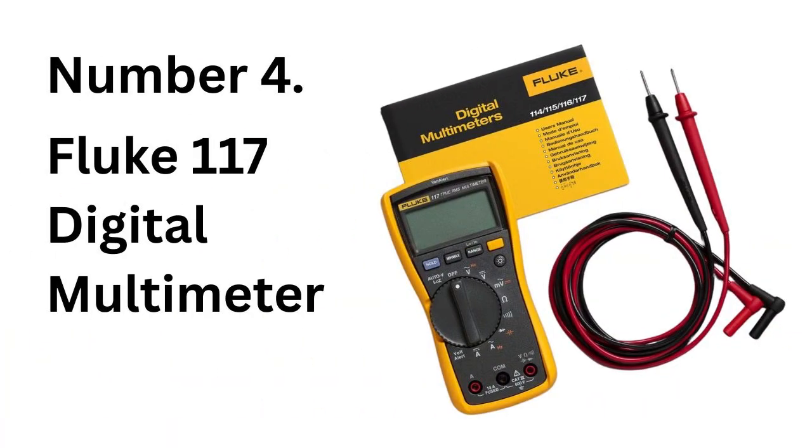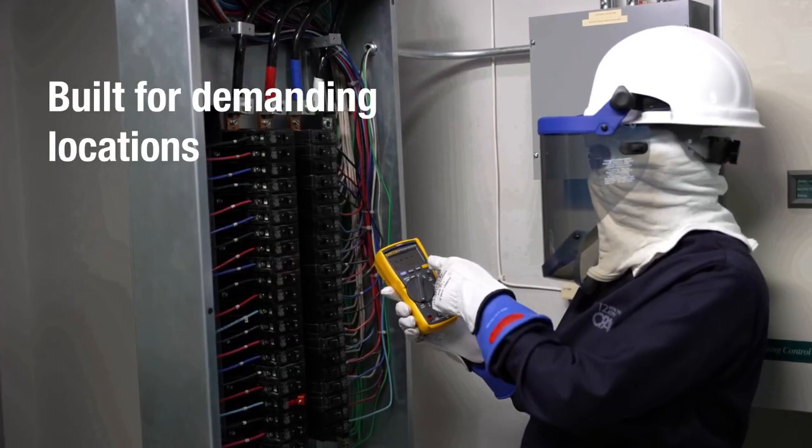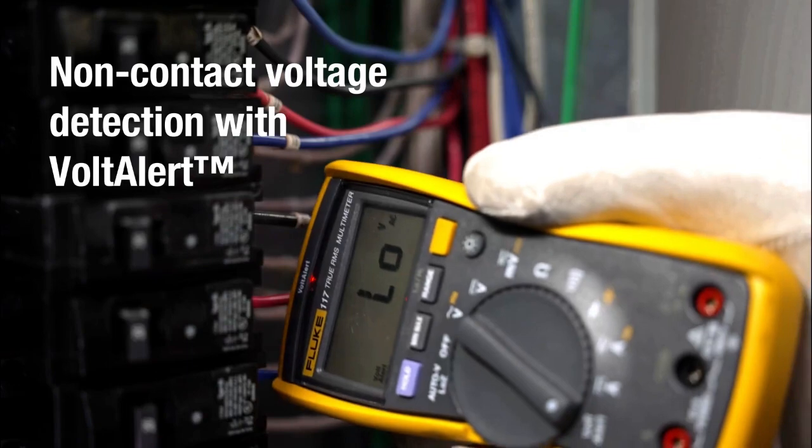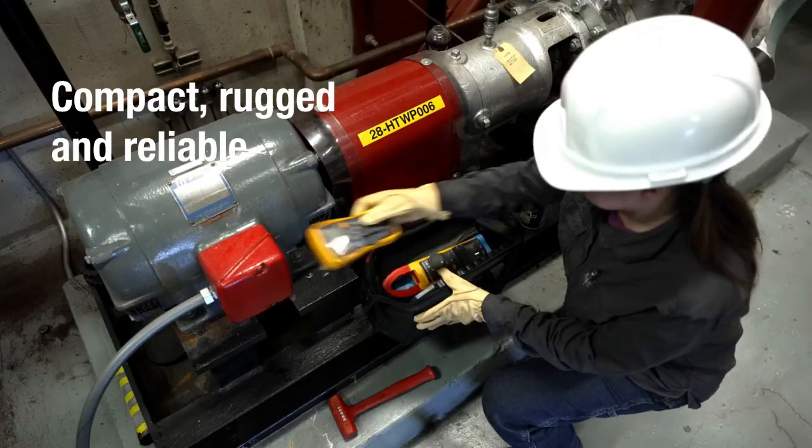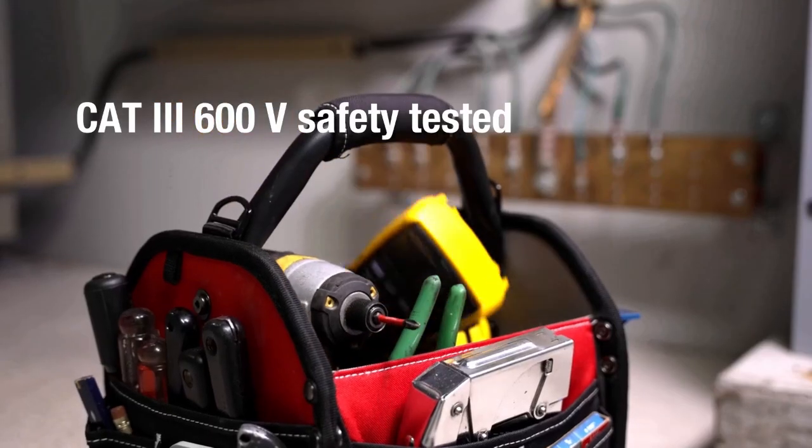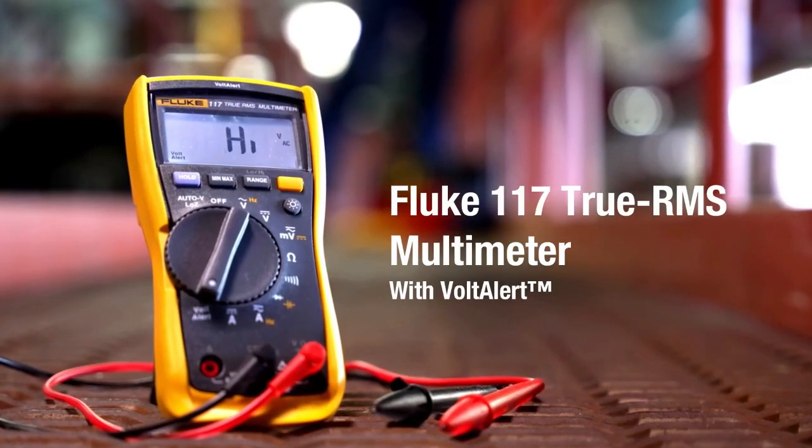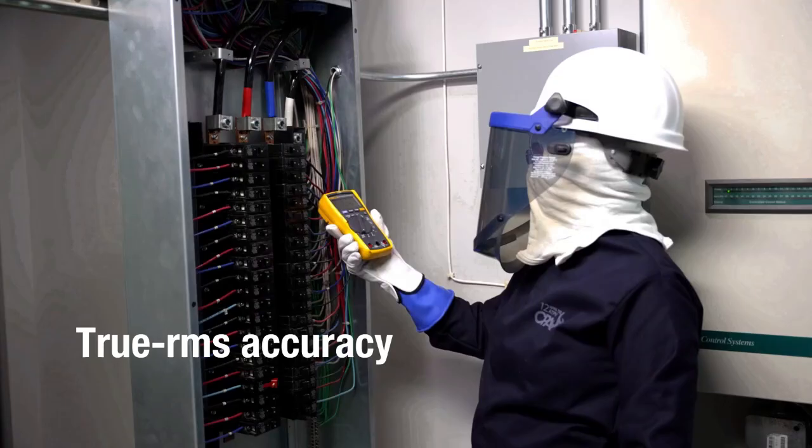Number 4. Fluke 117 Digital Multimeter. The Fluke 117 is a professional-grade digital multimeter designed for electricians and technical users, especially those working with AC systems. It features a true RMS design for accurate measurements, a built-in non-contact AC voltage detector, and a low-impedance input that automatically identifies voltage types and selects the correct range. Its clear, intuitive interface adds to its ease of use.